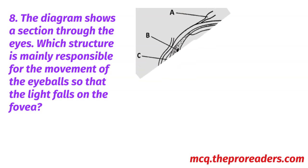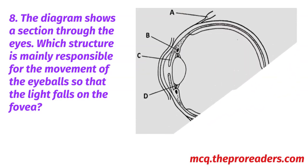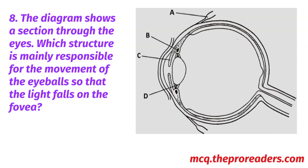The diagram shows a section through the eye. Which structure is mainly responsible for the movement of the eyeballs so that the light falls on the fovea? Options A, B, C, D. Option A is the correct answer.